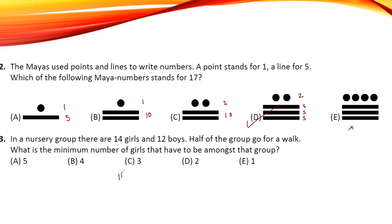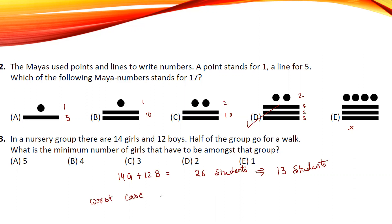There are 14 girls and 12 boys, so total students are 26. Half of them are girls, meaning 13 students go for a walk. Now consider the worst case scenario: to minimize the number of girls, all walking students will be boys. So there will be 12 boys and 1 girl.